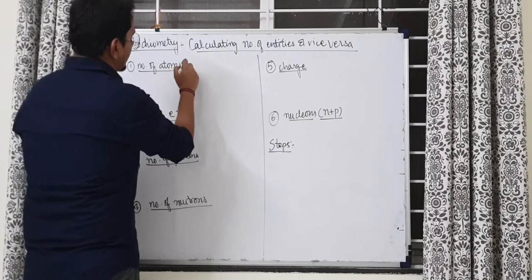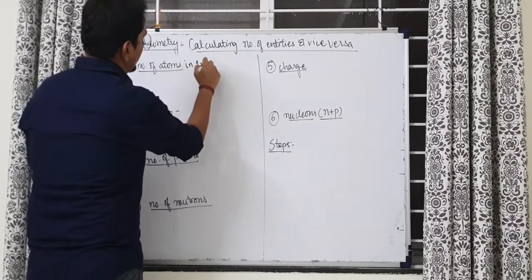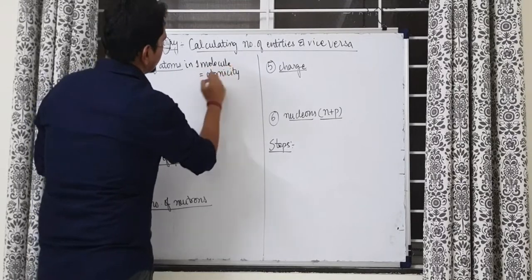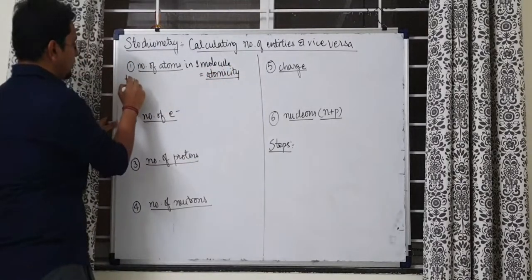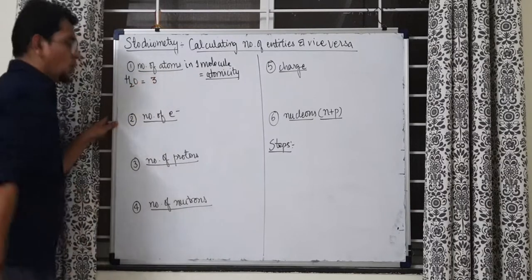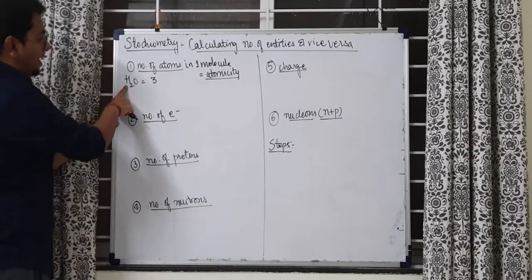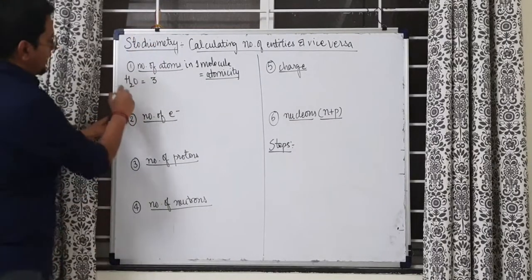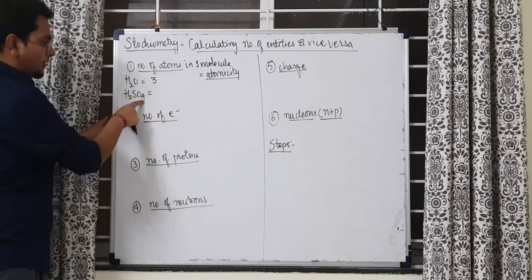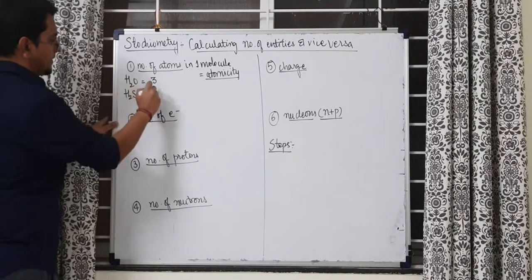So let us see how to find number of atoms. Number of atoms in one molecule is also known as atomicity. For example, for water, the atomicity is going to be 3. Why 3? There are 2 hydrogen atoms, 1 oxygen atom, total 3. Let us say for H2SO4, can you find? 4, 1, 5, 6, 7.